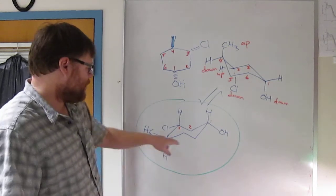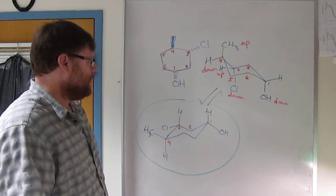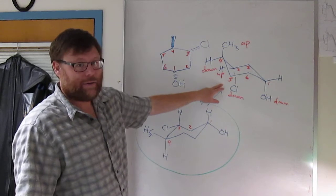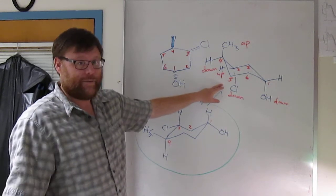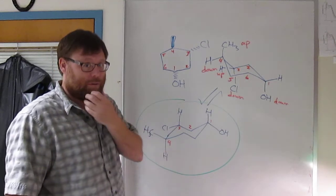The reason is we've got three substituents on this cyclohexane, and all three in the green circled structure are equatorial. All three in the other structure are axial. So there's a big difference here. If you have three substituents and you can put them all equatorial, you want to do that.